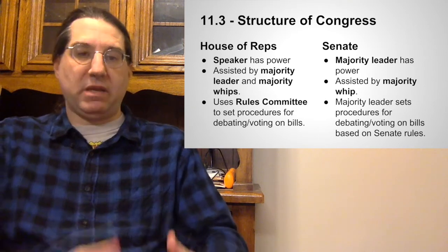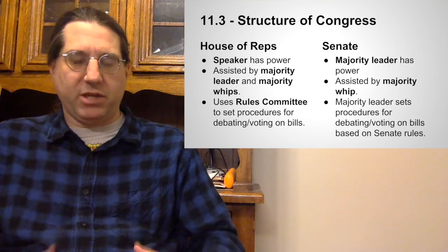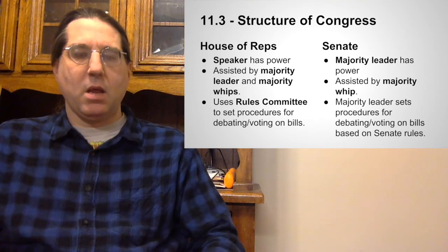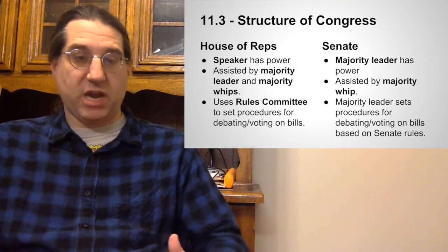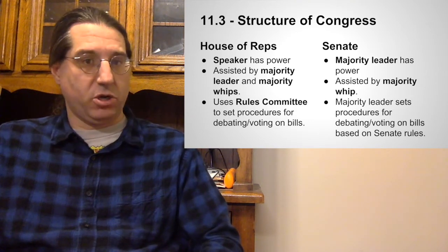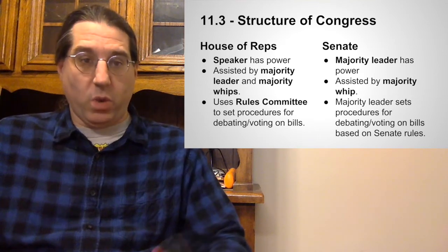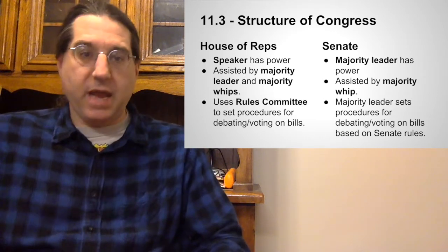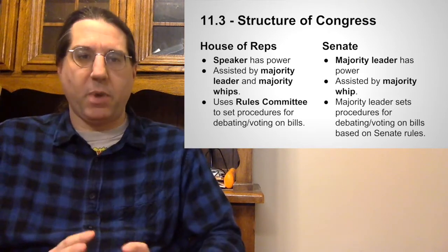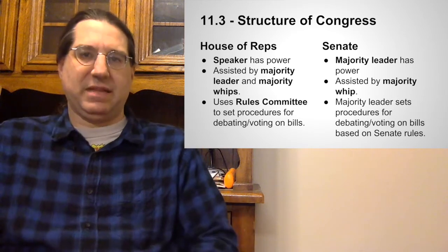The majority leader has whips who are supposed to help. A whip in legislative terms is somebody whose job is to go around and count up how many people are on each side of an issue and encourage people who are against the leadership to be for the leadership. They whip up the vote, they whip people into line — the whip's job is to help the leadership count and get the votes that the leadership needs.